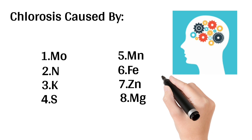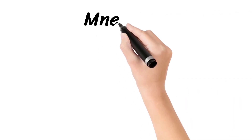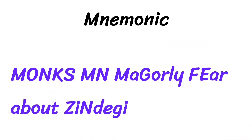The mnemonic for these eight elements is based on two images: the mind and life. The mnemonic is: 'Monks MaN Majorly Fear About Zindagi.' Here, 'man' means mind in Hindi and 'zindagi' means life in Hindi. The capital letters represent: Mo for molybdenum, N for nitrogen, K for potassium, S for sulfur, Mn for manganese, Mg for magnesium, Fe for iron, and Zn for zinc. The meaning is: saints/monks majorly fear about their life.